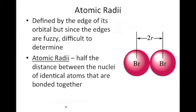Moving on to the different trends, we are going to talk about four trends that you can see on the periodic table. There are lots more than these four, but to start we're just going to focus on four. The first one is atomic radius, and the atomic radius is basically a measurement of the size of an element's atom.